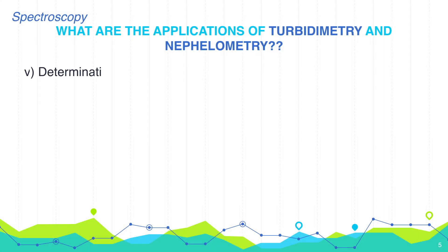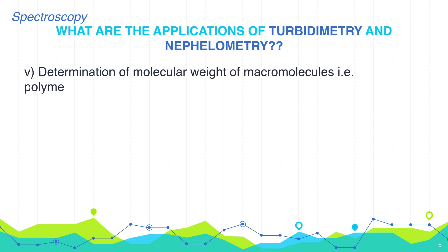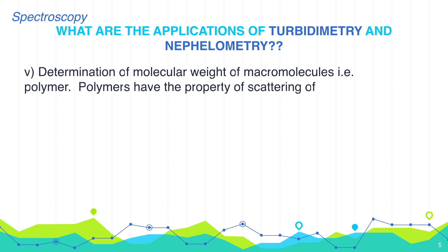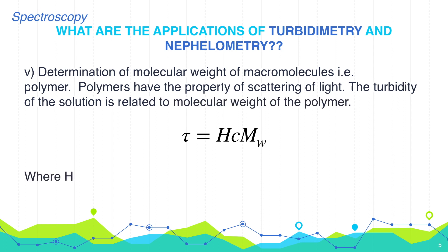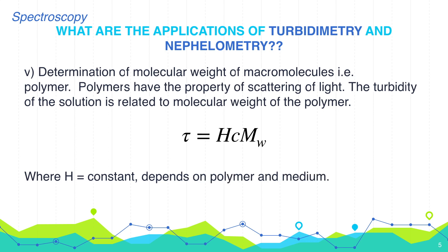Determination of molecular weight of macromolecules, i.e., polymers. Polymers have the property of scattering light. The turbidity of the solution is related to the molecular weight of the polymer. Turbidity tau equals H multiplied by concentration C multiplied by molecular weight, where H is a constant depending on the polymer and medium.